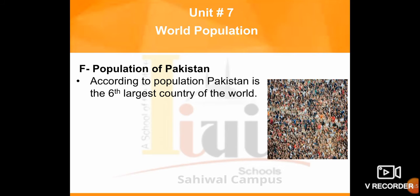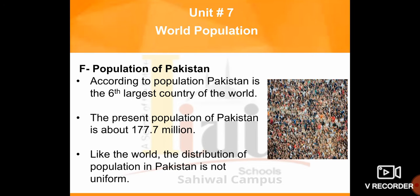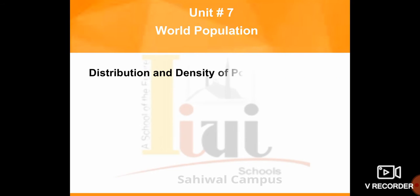The total population of Pakistan is 177.7 million. The distribution of population in Pakistan is not uniform — in some areas many people live, while in others fewer people live. Now let us look at the distribution and density of population.